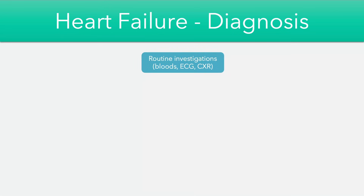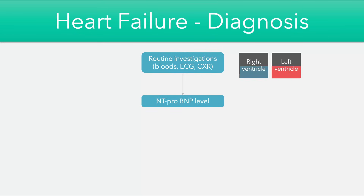Moving towards diagnosis, we usually start with routine investigations including bloods, an ECG, and a chest X-ray for all suspected patients. One key blood test is the NT-proBNP level — BNP is a hormone released in response to ventricular overload. Whenever there's volume overload, the ventricles respond by secreting BNP into the blood, which helps increase sodium and water excretion and reduces the overload burden on the heart. Although BNP is cardioprotective, it can be used as a marker — the more BNP present, the more likely there is some level of overload.